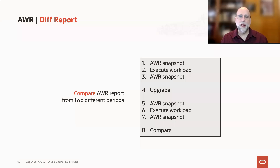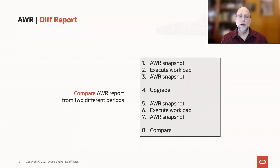What we're going to do is use an AWR diff report, which, just like a Unix diff command, is going to compare two different entities. In this case, the AWR reports represent two different execution periods for your system or systems. The way you do this is you take one set of AWR snapshots to produce a reporting period, you make some sort of change, and then you produce another set of snapshots, and then you can compare them.